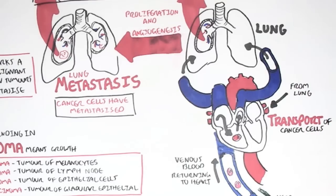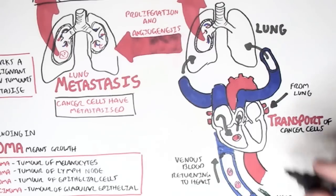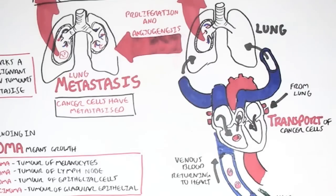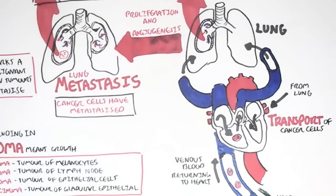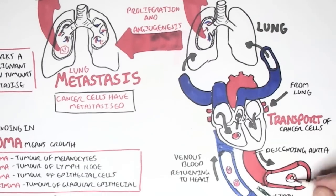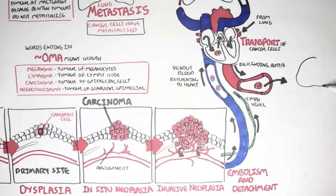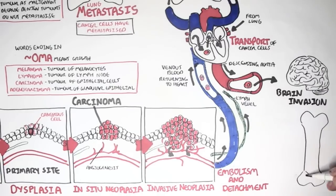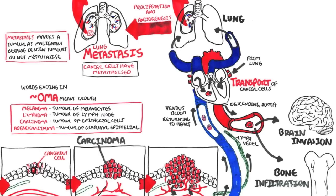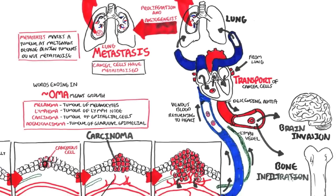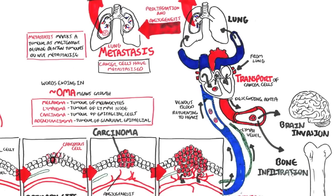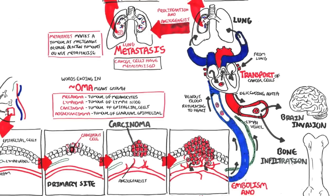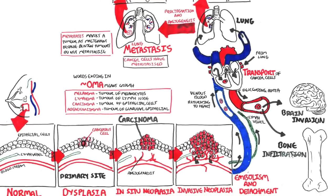The cancer cells can re-enter the heart and be pumped out through the aorta, traveling through the ascending or descending aorta. The cancer cell can invade the brain, causing serious consequences — essentially death. Or it can infiltrate the bone, causing complications such as anemia and disrupting blood flow. That was an overview and summary of how cancer spreads and the pathophysiology of cancer.